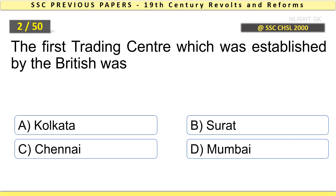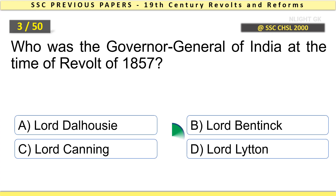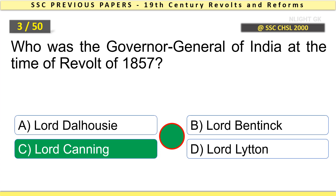The first trading centre which was established by the British was — Who was the Governor General of India at the time of the revolt of 1857? Lord Canning.